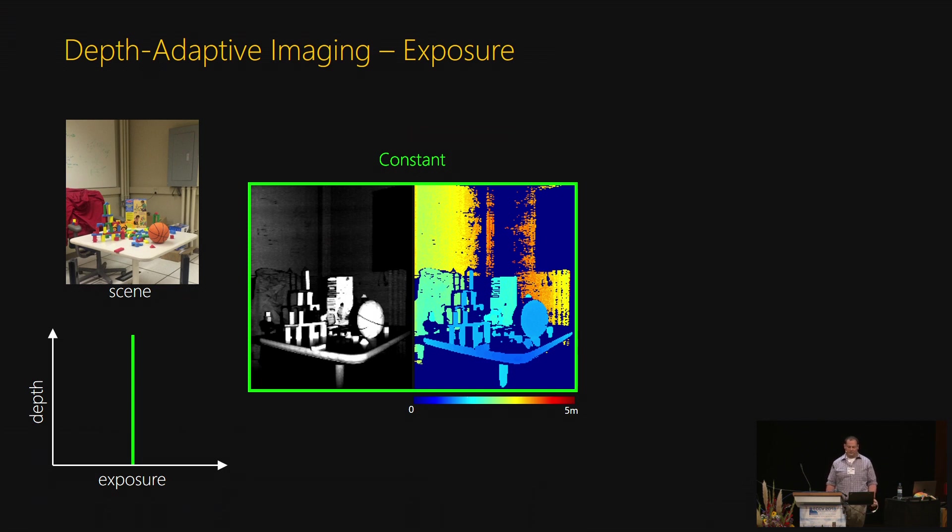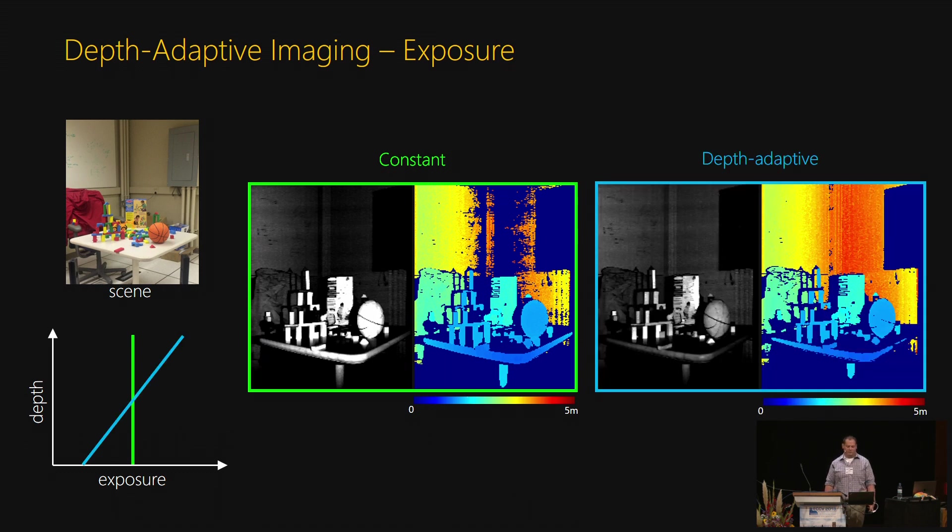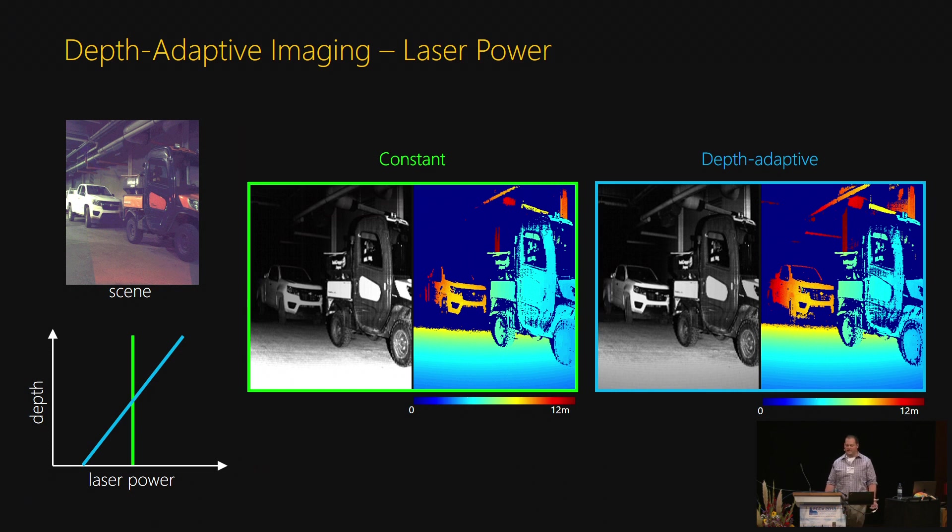And so here's a depth map of an indoor scene. With constant exposure over the full scene, the front objects are overexposed, and the far wall is underexposed. The nature of this device, though, enables us to adaptively adjust the camera exposure according to depth. By increasing the exposure with depth, we can create a properly exposed image and a better depth map. We can do the same thing with laser power. And so this type of single-shot depth-adaptive imaging is impossible with LIDAR or other systems where you don't know the depth of the scene you are imaging. Since we are designing the light curtain specifically for certain depths, we can adaptively tune the system for better results.